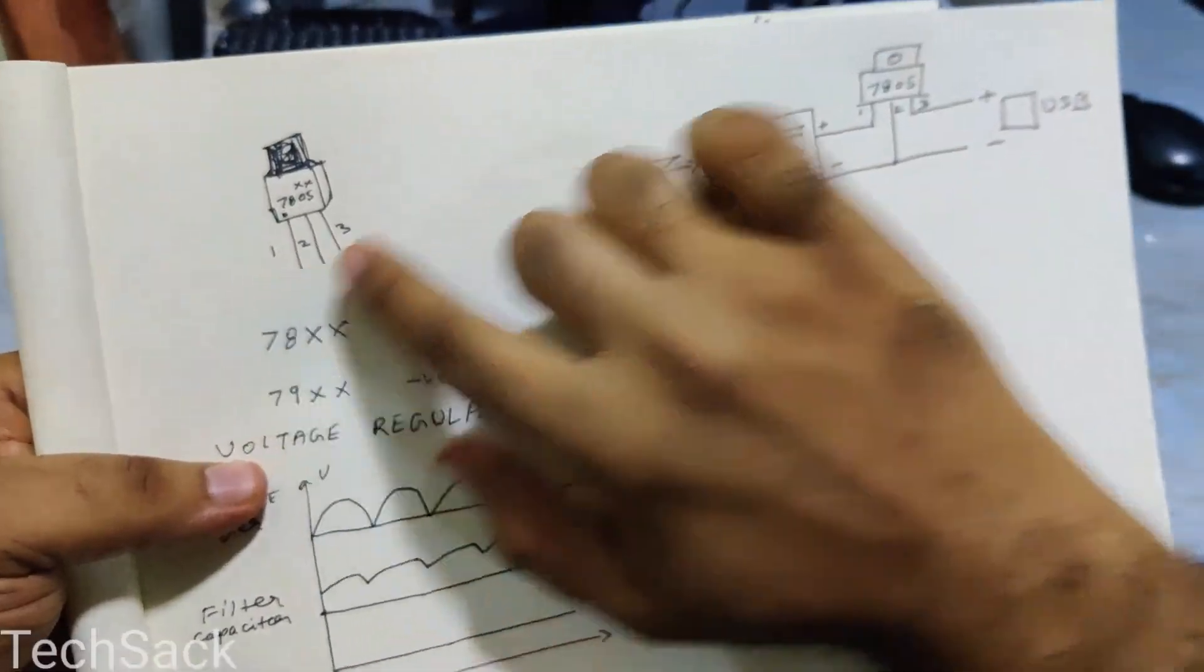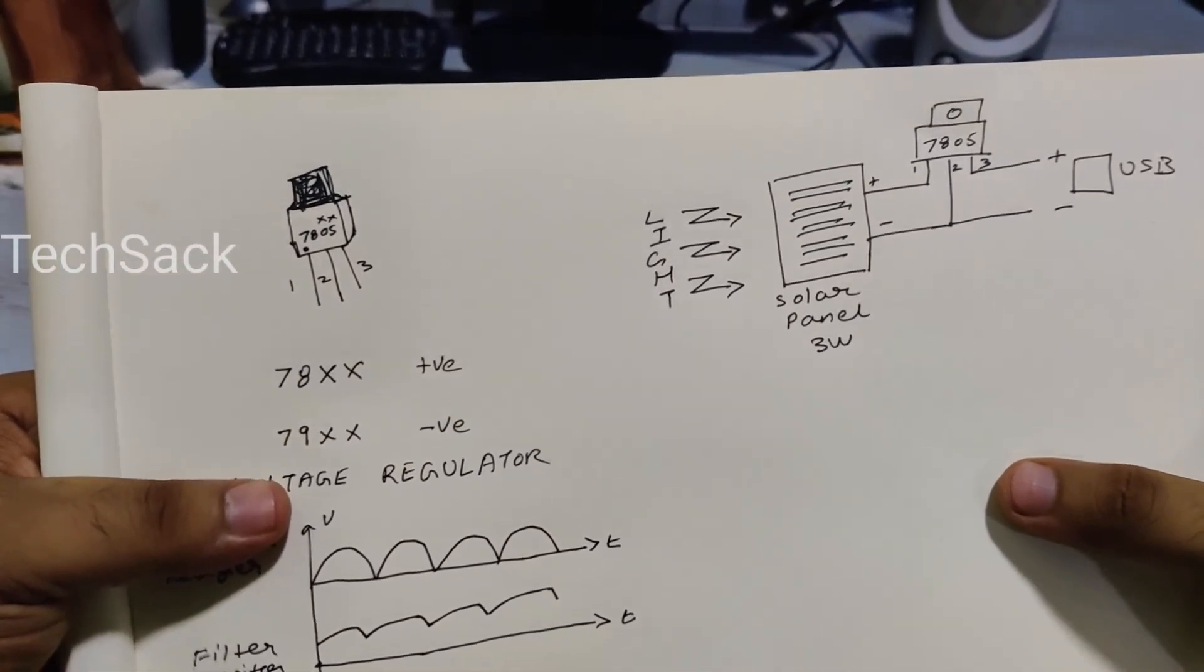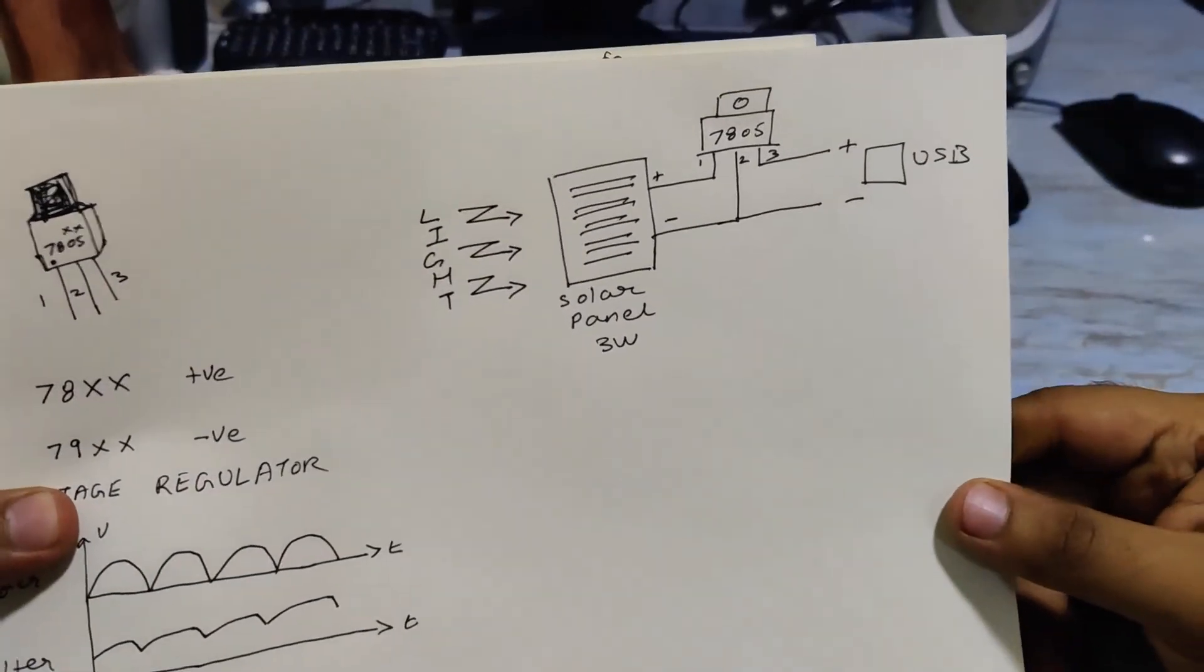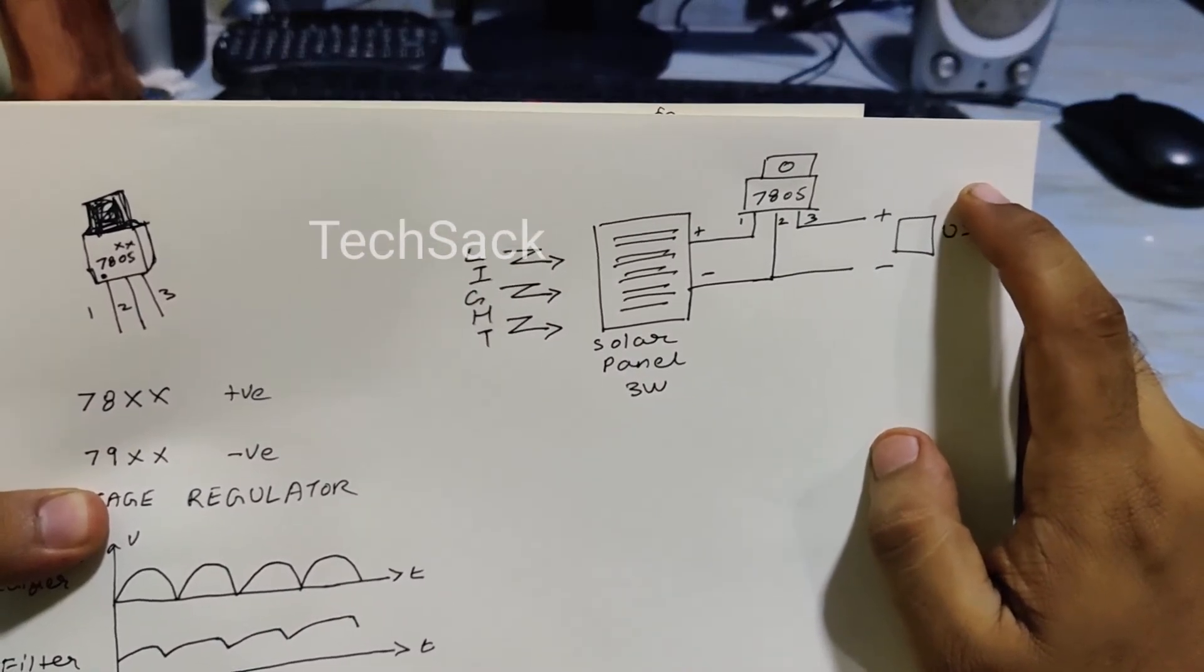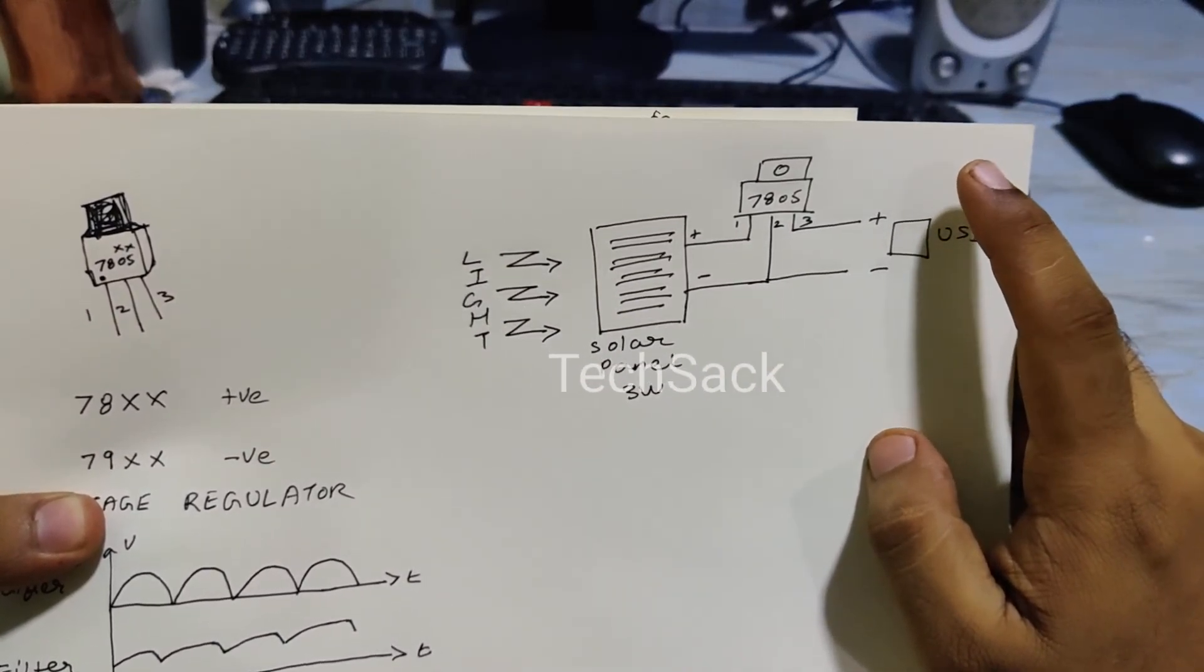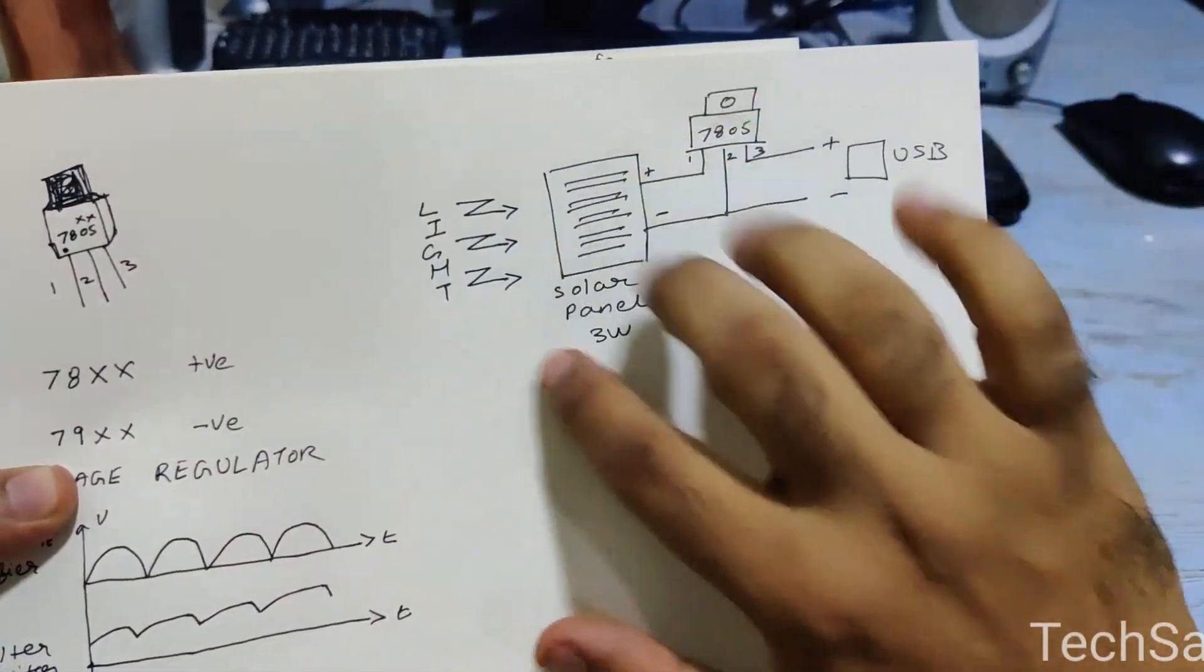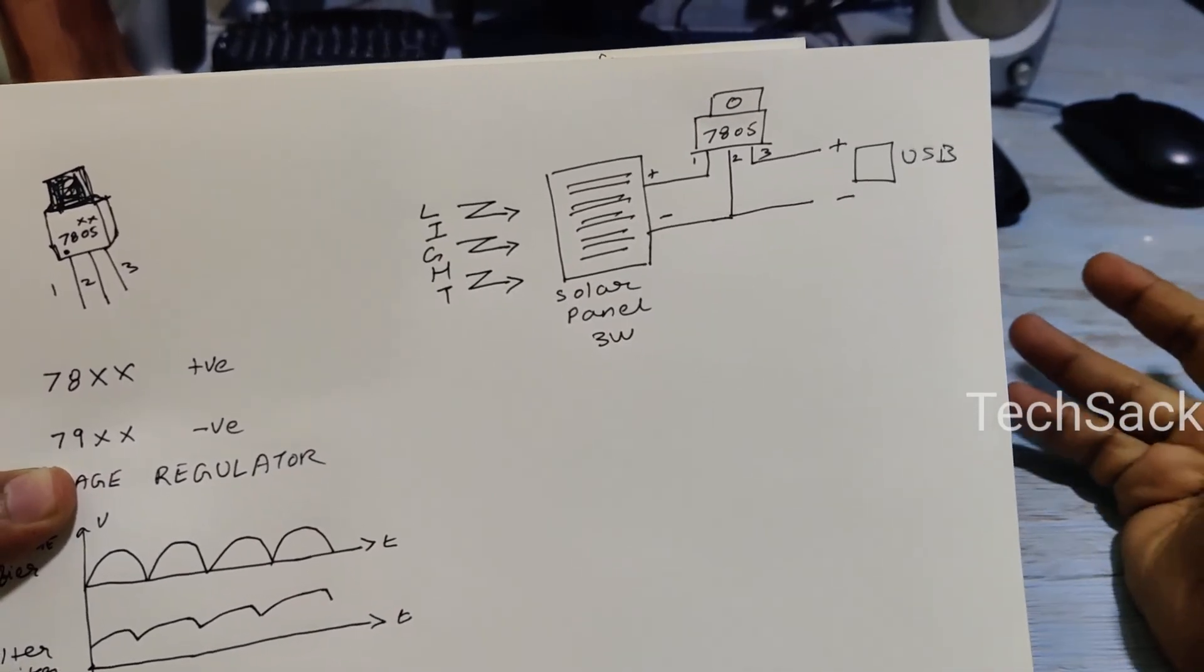This 7805 series of ICs can have input voltage up to 12 volt and give a constant regulation of 5 volt. So I just need 5 volt constant output voltage and current up to 500 milliamps. However, that is not possible using a 3 watt solar panel, so my current would be somewhere around 300 milliamps at the output.